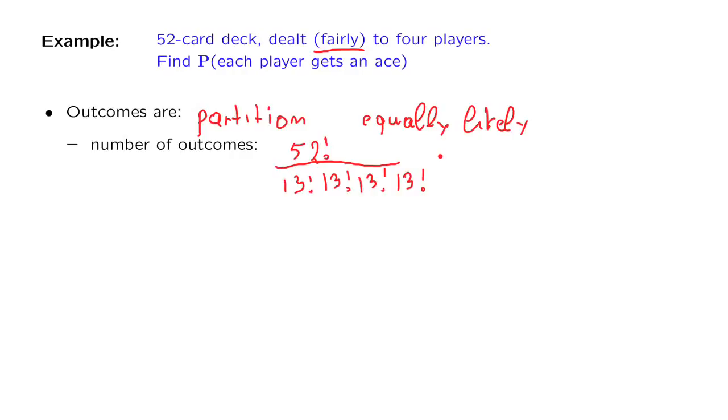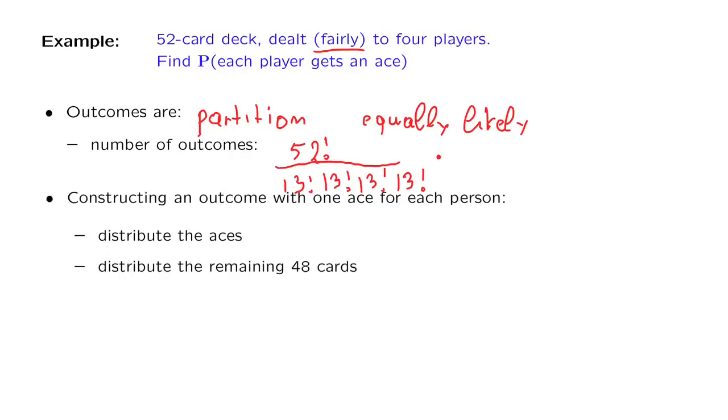So now let us count the number of outcomes that belong to the event of interest, namely the outcomes where each person gets an ace. We think of the process of constructing such an outcome as a multi-stage process, and we count the number of choices that we have at each stage.